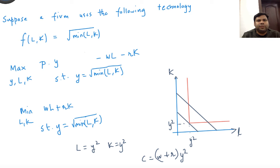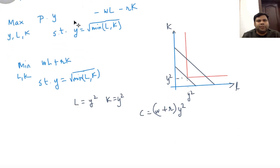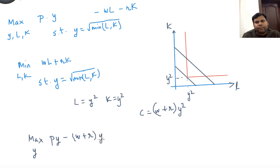This is how you will solve for the supply. We will write the profit maximization problem: maximize with respect to Y: PY minus (W plus R)Y square. Now take the derivative of this with respect to Y.